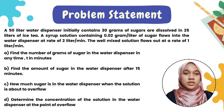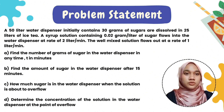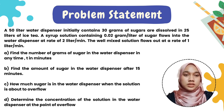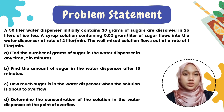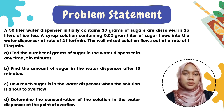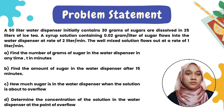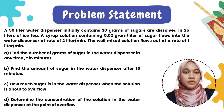Hi, my name is Roshahira. I will explain the problem statement. A 50-liter water dispenser initially contains 30 grams of sugar dissolved in 25 liters of iced tea. A syrup solution containing 0.02 grams per liter of sugar flows in at 2 liters per minute. The well-mixed solution flows out at 1 liter per minute. Find the number of grams of sugar in the water dispenser at any time t in minutes.